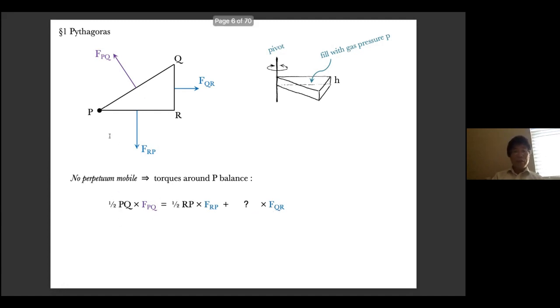I shall fill in the torque formula. The torque due to FPQ is easily computed because that's the distance from the pivot P to the line of force, that is half of PQ. And similarly, for the torque due to FRP. So far, you notice we have not used the hypothesis that this was a right angle triangle. It is here for the first and last time that I invoke this hypothesis. I claim that because R is a right angle, the torque due to FQR around P is exactly equal to one half of QR times that FQR. This is the only place where the right angle hypothesis is used.